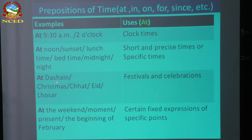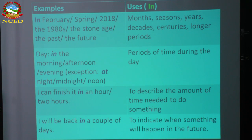I have seen many students using 'in' with festivals, but it's completely incorrect — you must use 'at' with festivals and celebrations. For certain fixed expressions of specific points: at the weekend, at the end of this month, at the moment, at present, at the beginning of some month — we use 'at.' Now with 'in': in is used with months and periods longer than a day — in February, in spring, in 2018, in the 1980s, in the past, in the future — months, seasons, years, decades, centuries.